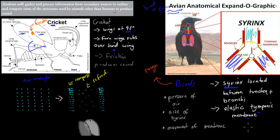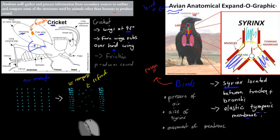The syrinx has an elastic tympanic membrane. For your exam, you can say it has an elastic membrane found in the syrinx — that's good enough. But more important than the name is understanding how the bird actually uses this membrane to produce sound.